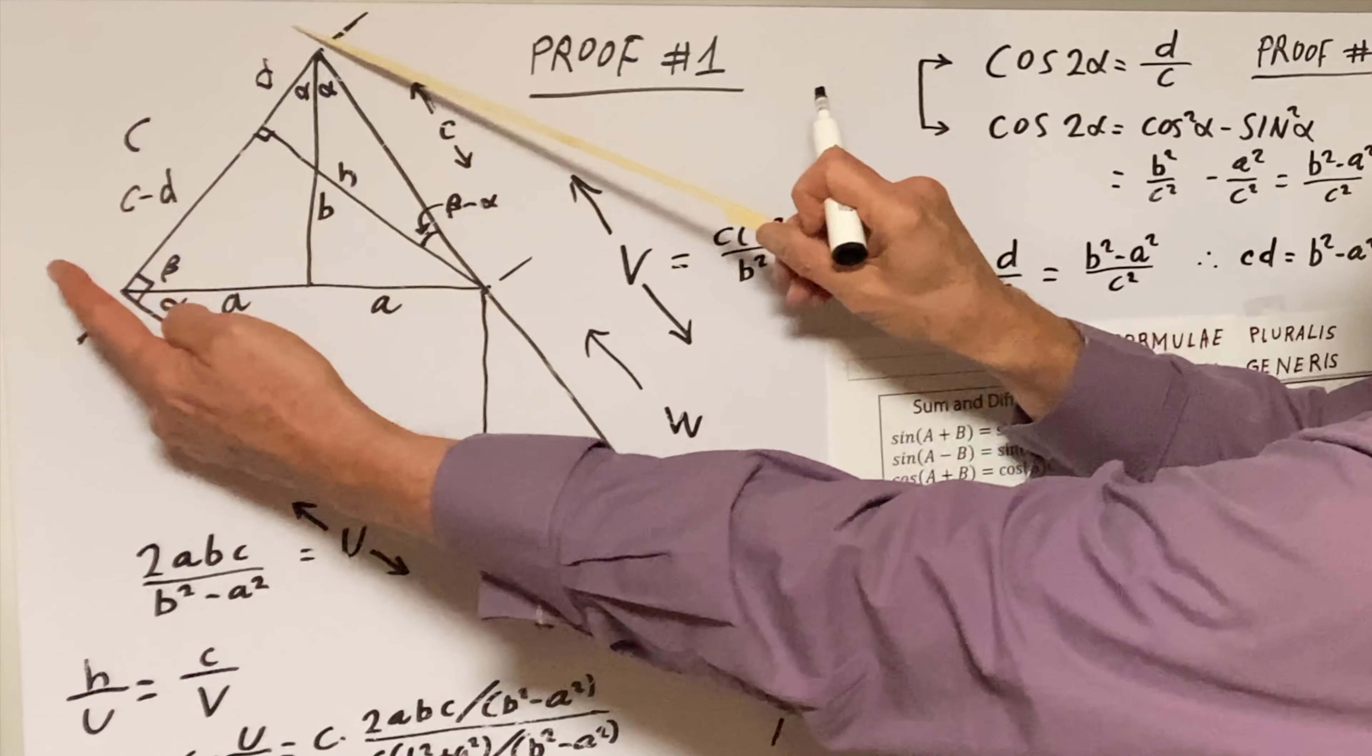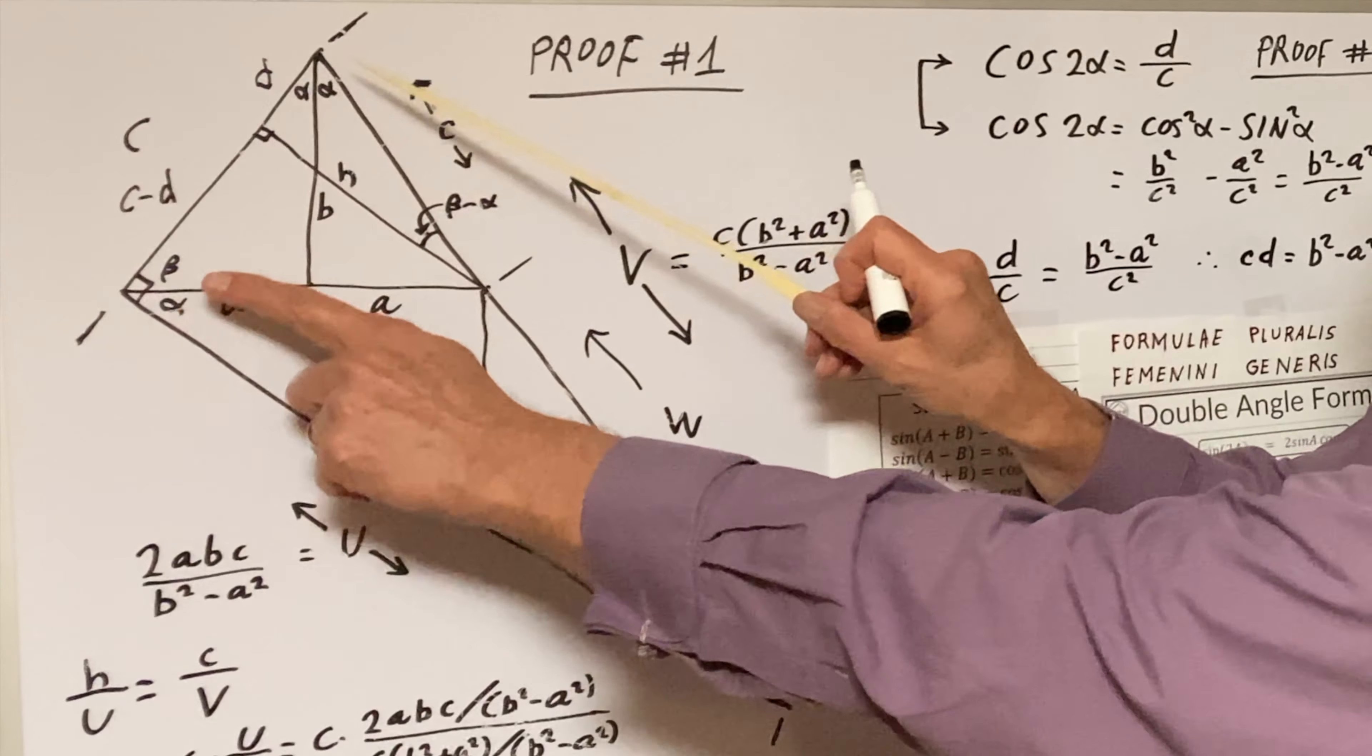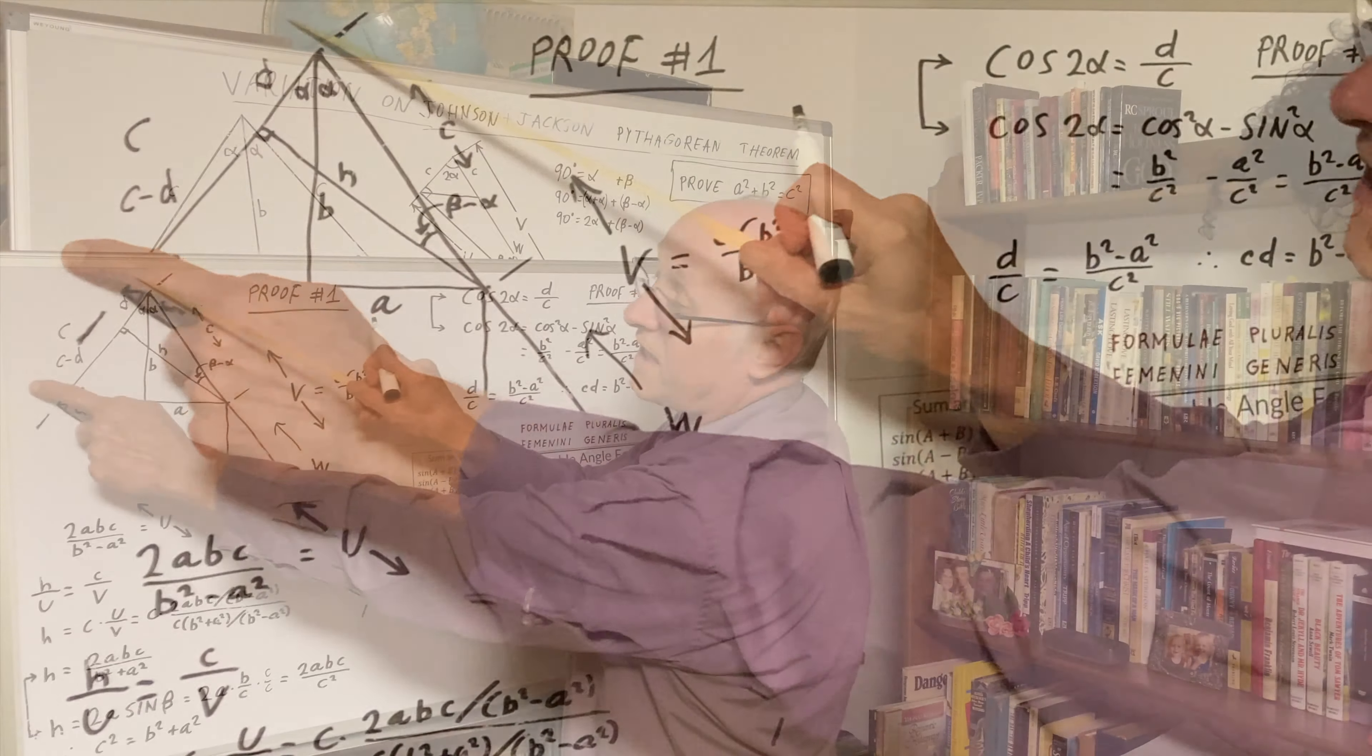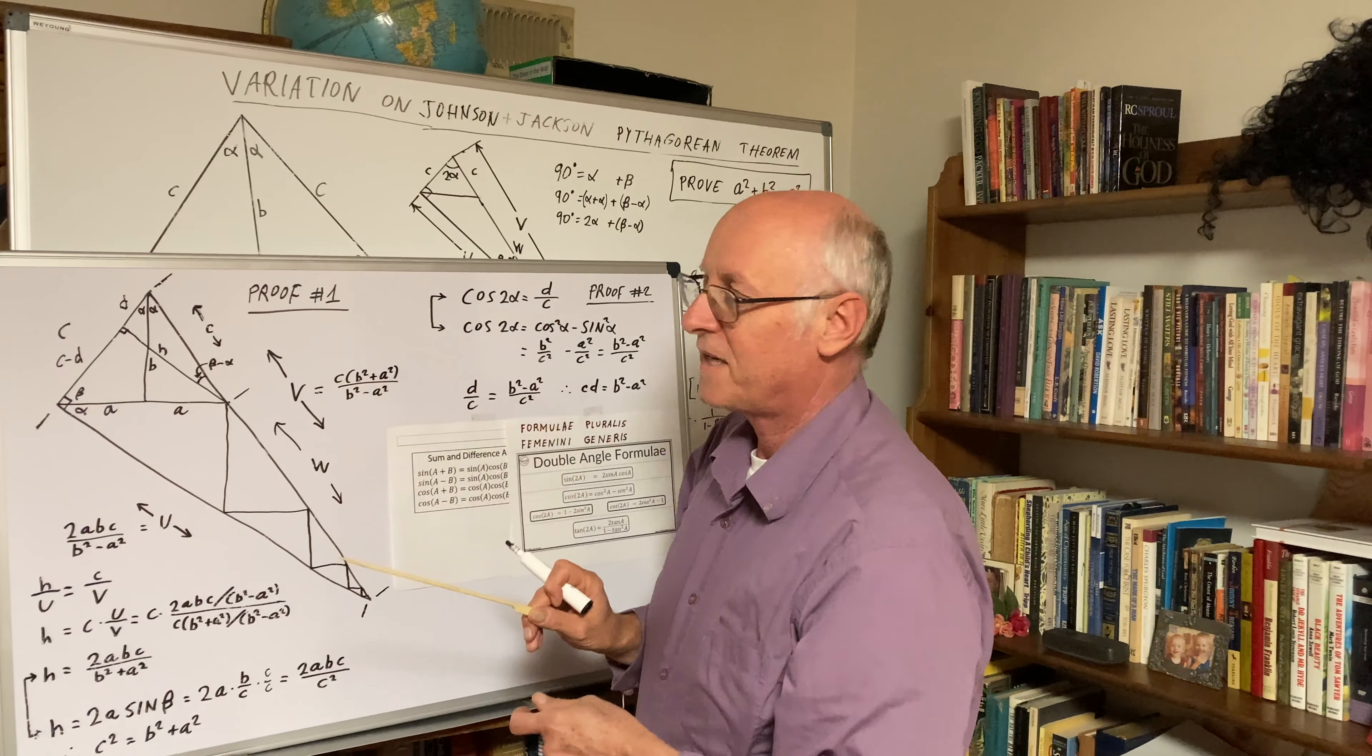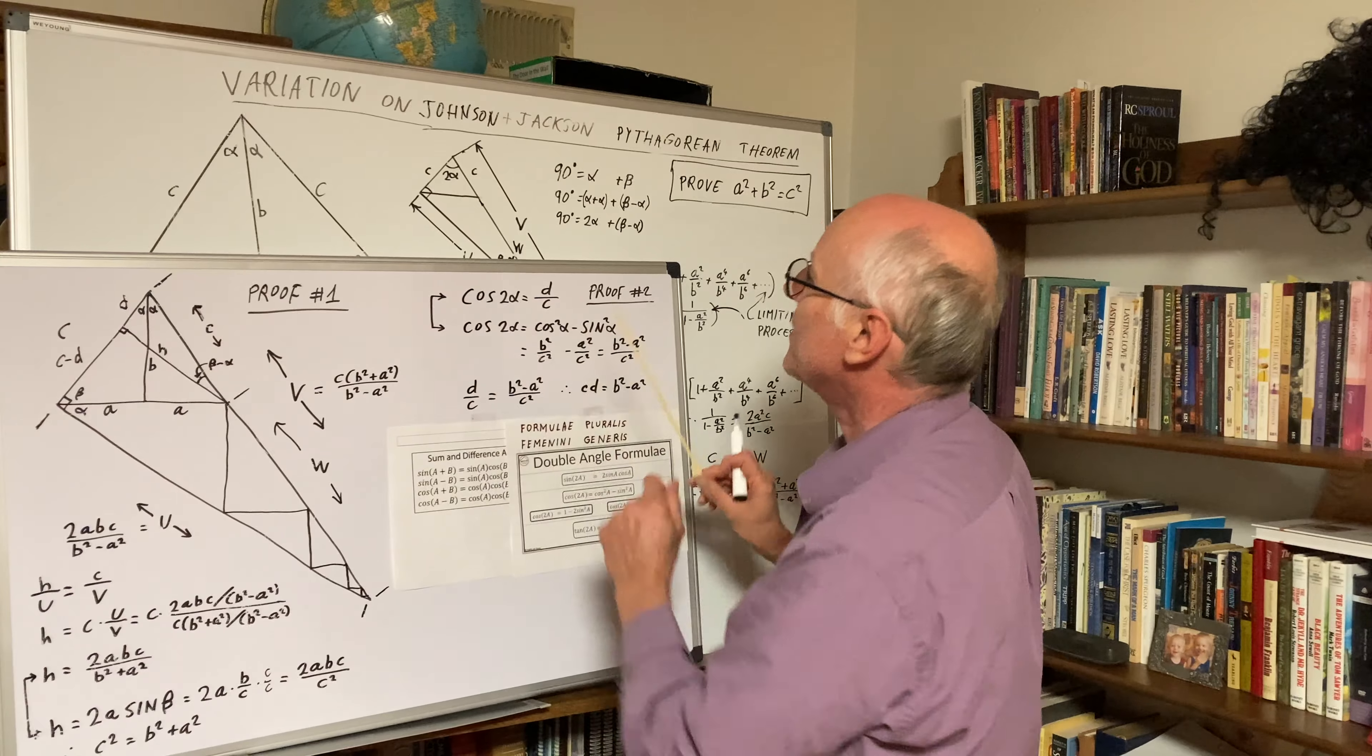From here to here is C. We call this D. So this must be C minus D because C minus D plus D equals C. It all adds up. Basic algebra. Let's look at this.